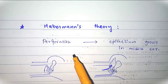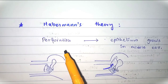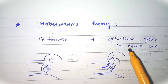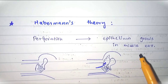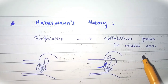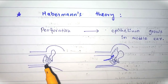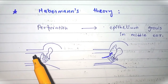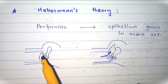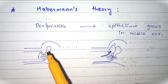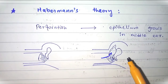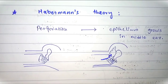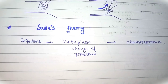Next is Habermann's theory, which proposes epithelial invasion. Whenever there is a perforation in the tympanic membrane, this pre-existing perforation allows epithelium from the external auditory meatus or the outer eardrum surface to grow into the middle ear through the perforated tympanic membrane, especially when the marginal part of the annulus tympanicus has already been destroyed. As you can see, skin cells from the external ear meatus or tympanic membrane invade inside the middle ear, where they start to form skin epithelium causing cholesteatoma.